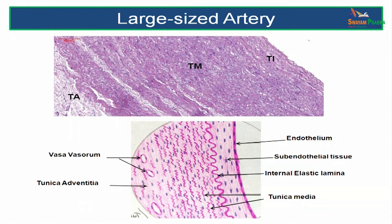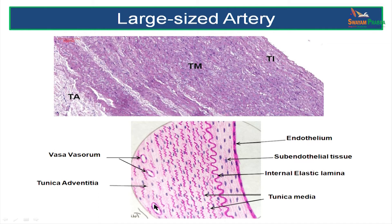In a high power view of the large sized artery, you can see the endothelium and tunica intima, and a very thick tunica media. The tunica media has more elastic fibres and less smooth muscle fibres, so a prominent internal elastic lamina is not seen. The diagram shows the endothelium on a basal lamina, subendothelial connective tissue, a less prominent internal elastic lamina, a lot of elastic fibres in the tunica media along with smooth muscle cells, and a much thinner tunica adventitia. Note the vasa vasorum in the tunica adventitia.